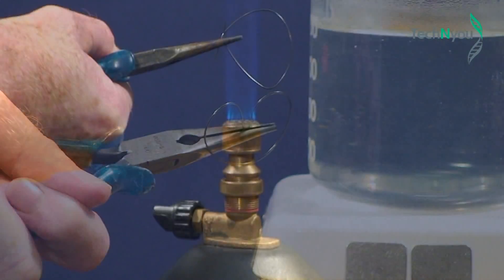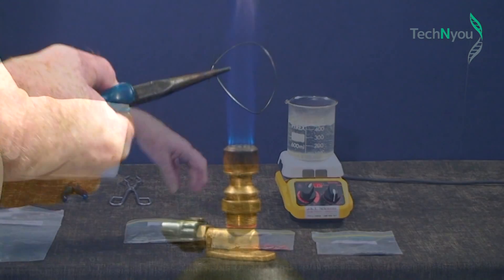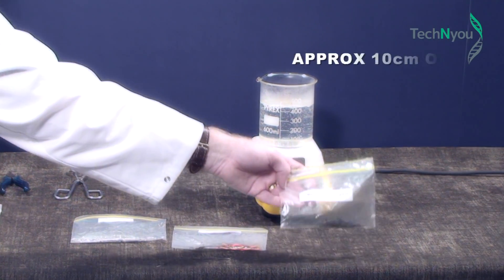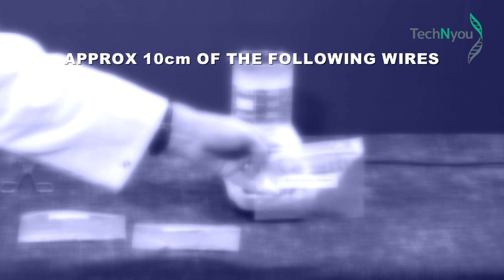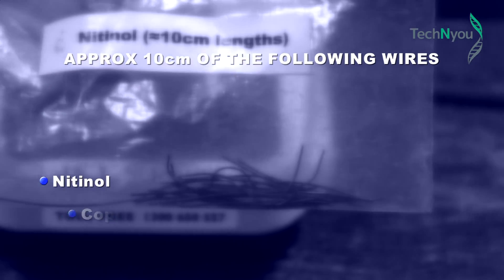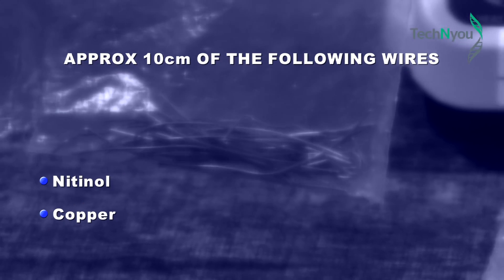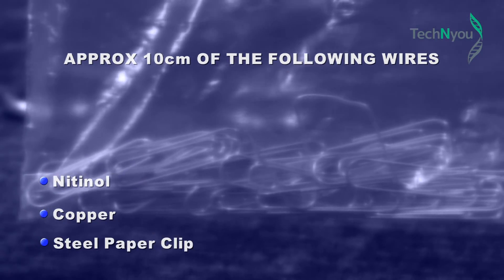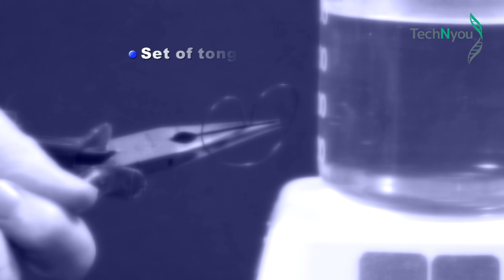This is a very simple experiment to do. We need only a few items of equipment: approximately 10 centimeters of each of the following wires: Nitinol, copper and a steel paper clip, a set of tongs or pliers.